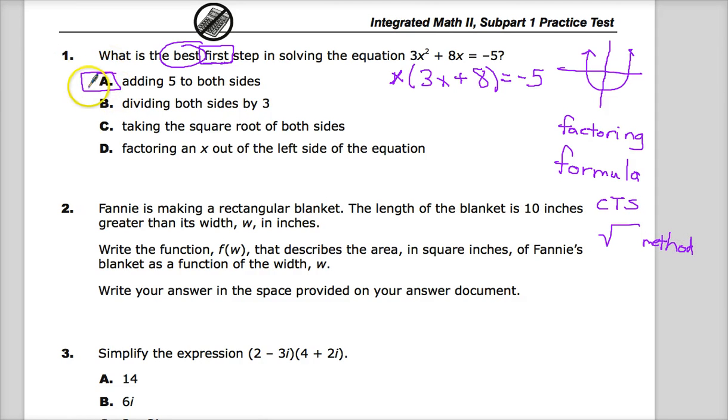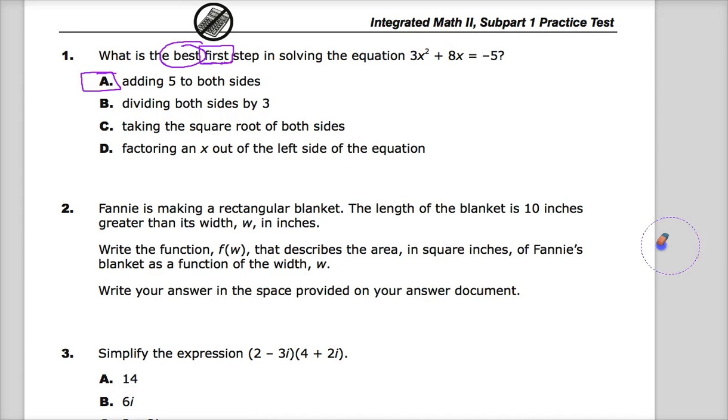So your real value in this question is number one. You want to add 5 to both sides, because it gives you the best opportunity to solve the problem, because it gives you the most options. And that's really what best means. It doesn't mean what thing do you like the most. It's more about what gives you the most options to solve the problem to get to the correct answer.